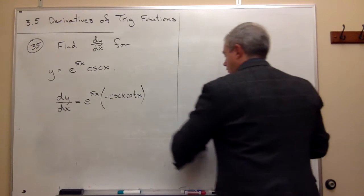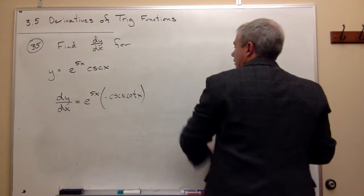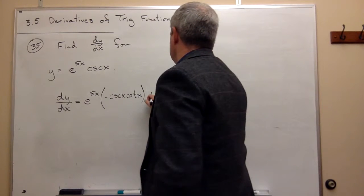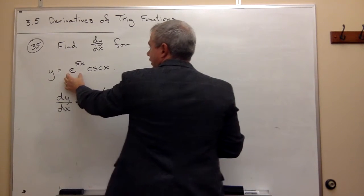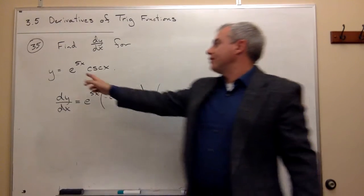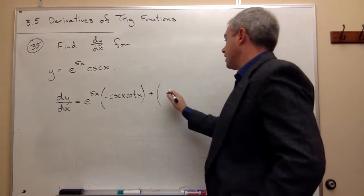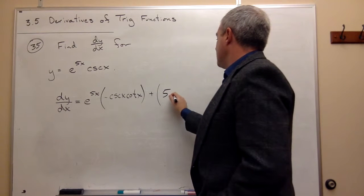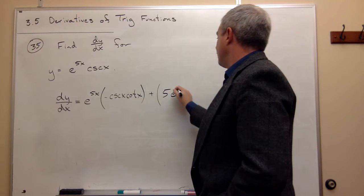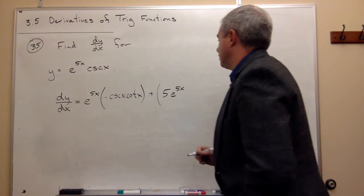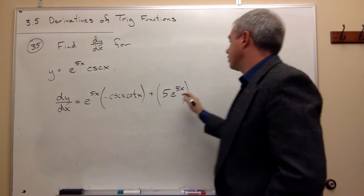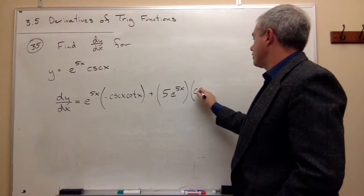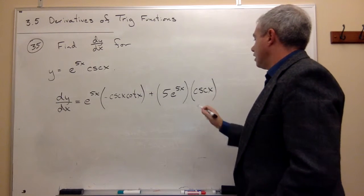Then we want to add on the derivative of the first function. Well, the derivative of e to the 5x, we've learned, is 5e to the 5x times the second function left alone, which is cosecant of x.